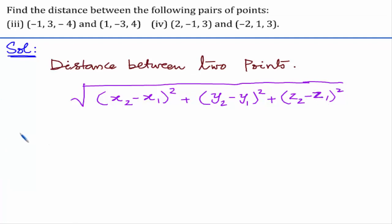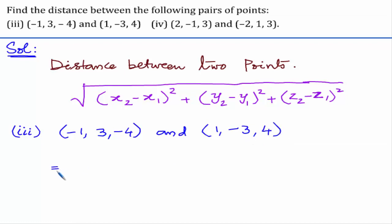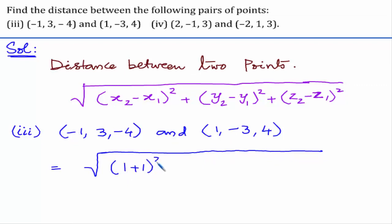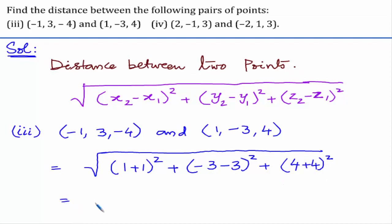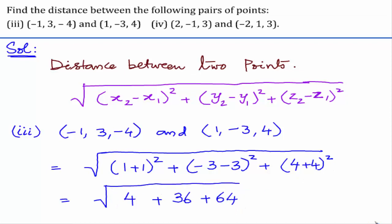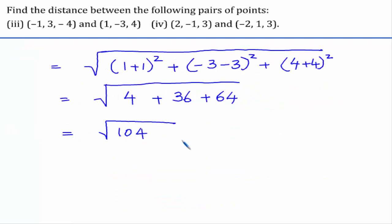Let us consider the third part, which has the points (-1, 3, -4) and (1, -3, 4). Substituting into the formula: (1 minus of minus 1) whole square plus (minus 3 minus 3) whole square plus (4 minus of minus 4) whole square. This gives us: 2 squared is 4; minus 6 whole square is 36; 8 whole square is 64. This gives square root of 104, which simplifies to 2 root 26 units.